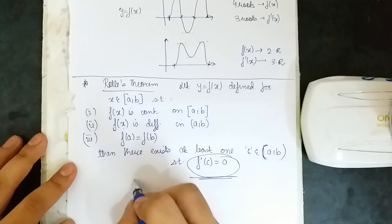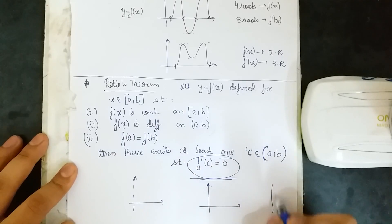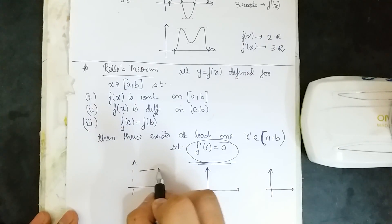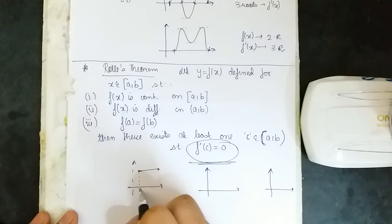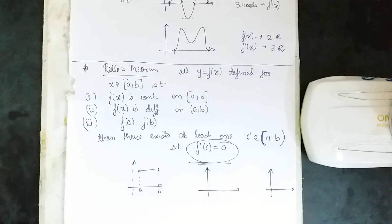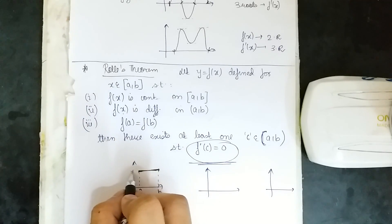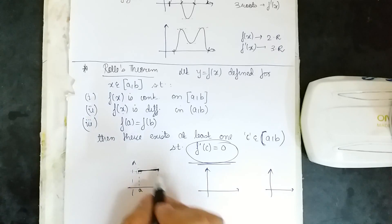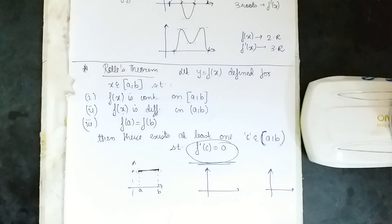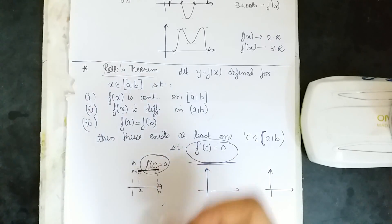Let me show you with three graphs. First, if we have a constant straight line from a to b, then f(a) = f(b) and f'(c) = 0 — that is quite clear. For the second graph, the function forms a curve where f(a) = f(b). The function is continuous on [a, b], differentiable, and f(a) = f(b), so f'(c) = 0 at that point.